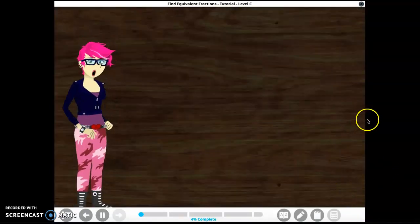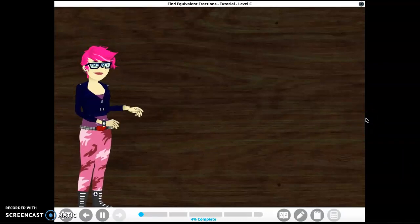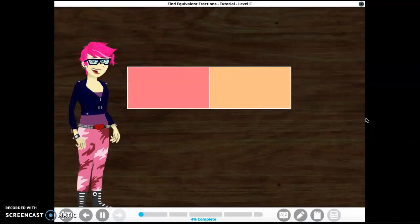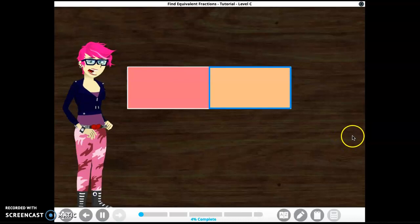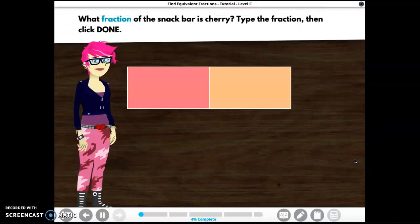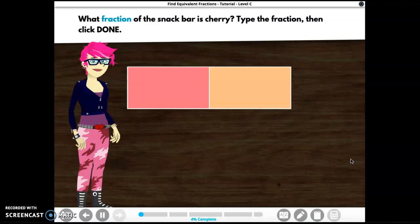Before we make anything, I want to make sure we get it right for our customers. I'm very visual, so I cut a strip to represent our creamy dream snack bar. See, part of the bar is cherry. That part is shaded pink. And part of it is coconut. Does this look right? Let's think about it. What fraction of the snack bar is cherry? Type the fraction, then click done.